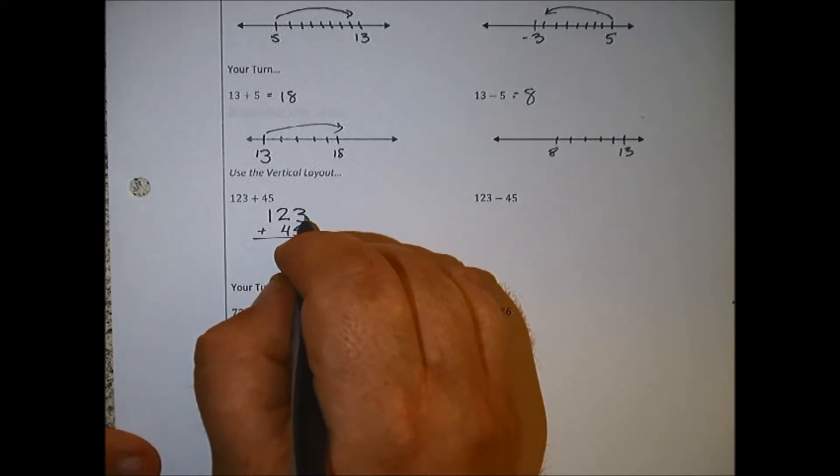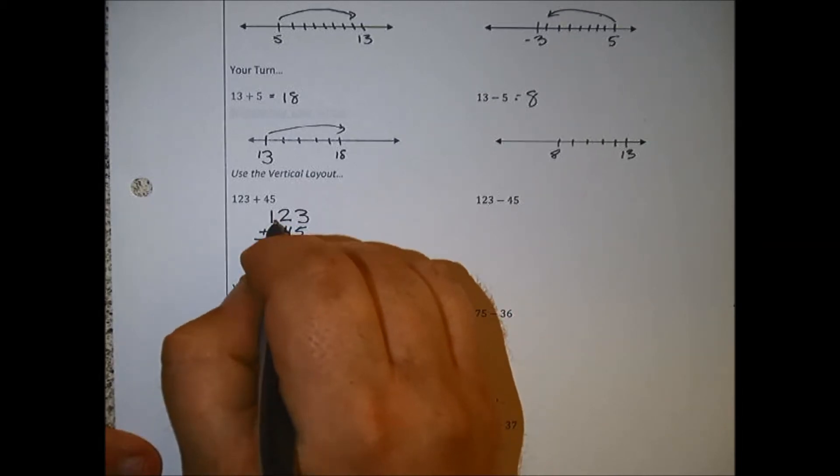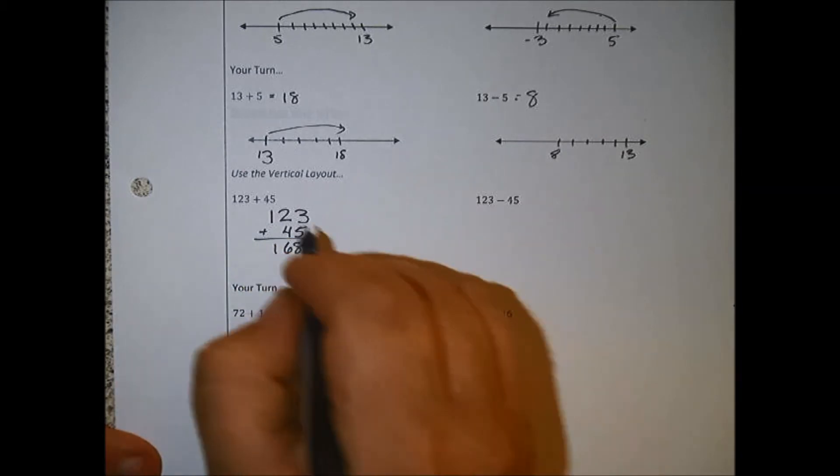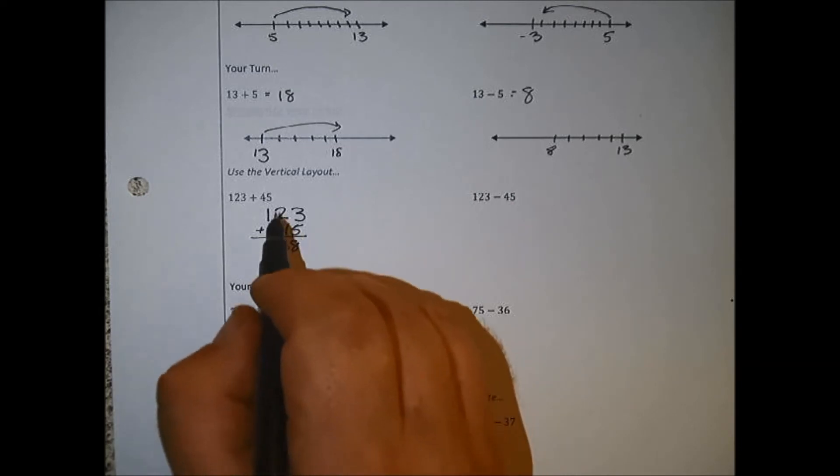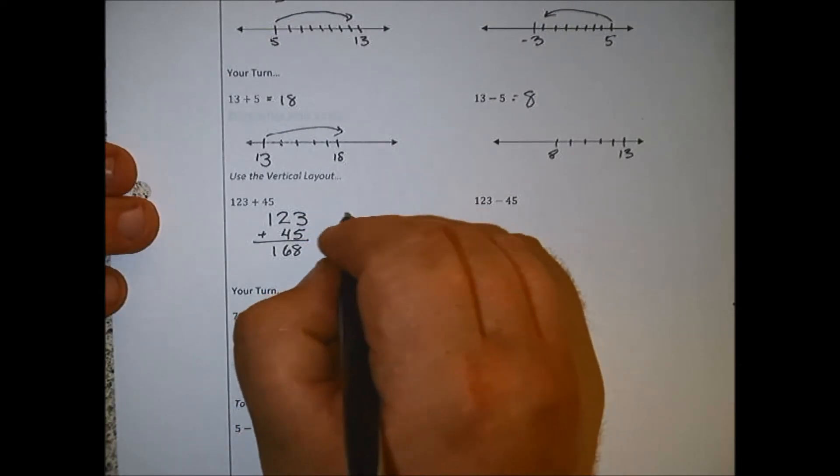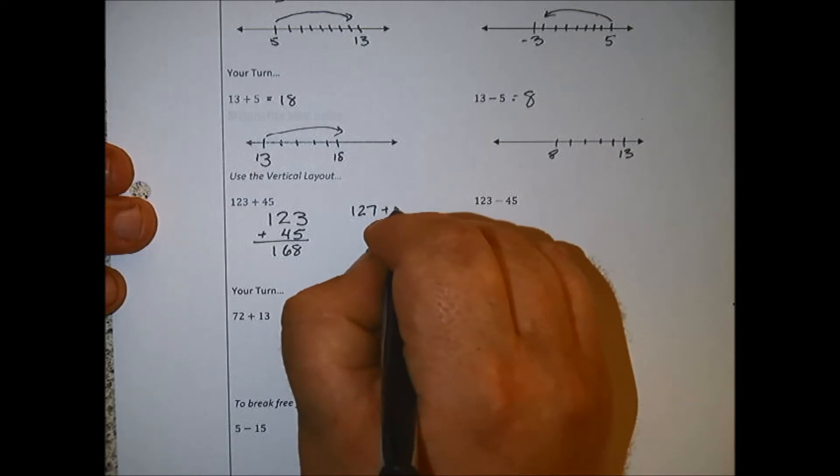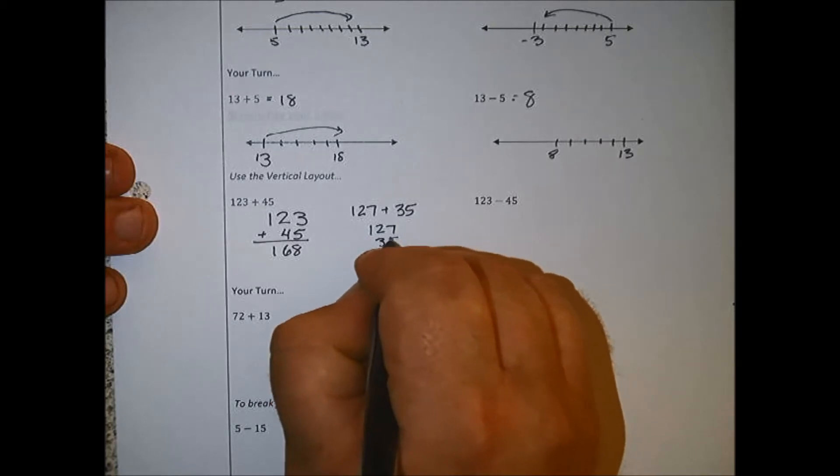Here, all I want to do is go 3 plus 5, that's 8, 2 plus 4 is 6, and 1 plus 0 is 1, so we get 168. If any of these numbers were to come up to be more than 10, we would add the 1 up above. Maybe if we had 127 plus 35, we're gonna add those. 7 plus 5 is 12, so I put the 2 down below, I put the 1 up above. 2 plus 3 is 5 plus 1 is 6, so 162.